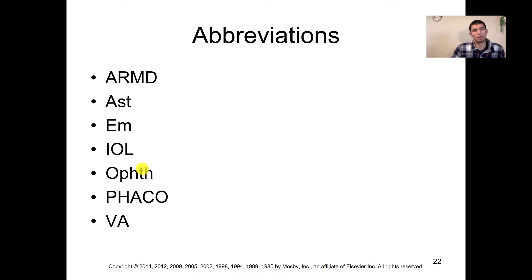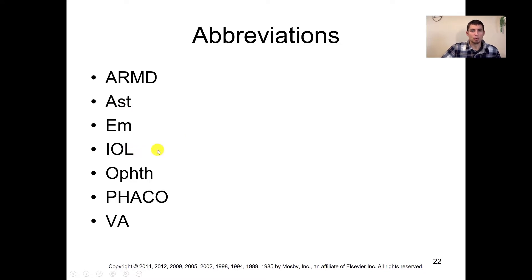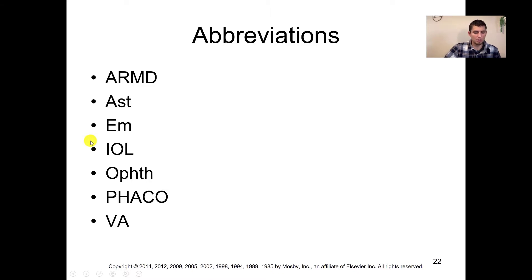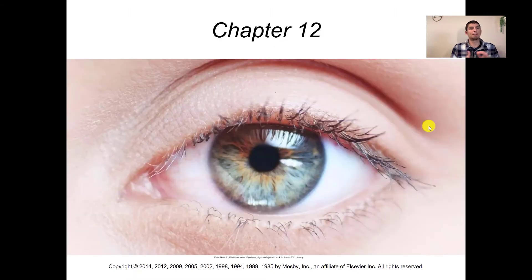Finally on page 544, we have our abbreviations. We've seen most of these: AMD for macular degeneration, AST for astigmatism, IOL for intraocular lens, OPTH for ophthalmology, FACO for phacoemulsification, VA for visual acuity, and EM for emmetropia. That finishes up chapter 12 on the eye in medical terminology. Next we'll be moving over to the ear in chapter 13, so look for that video and we'll see you there.